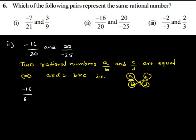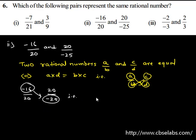We have negative 16 upon 20 and 20 upon negative 25. First, let us find the product of the numerator of the first rational number with the denominator of the second — that is, negative 16 multiplied by negative 25. This gives 16 times 25, which is 400. Negative times negative is positive.